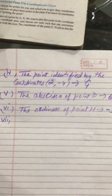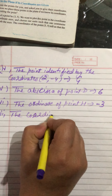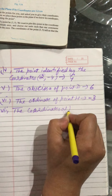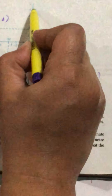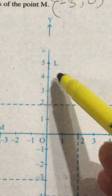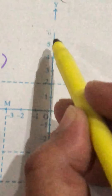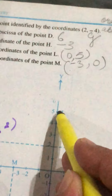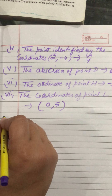The seventh part asks for the coordinates of point L. You can see point L on the graph. L does not lie in any of the quadrants — it lies on the positive y-axis. On the y-axis, the x-coordinate is always 0. Here y is 5, so the coordinates of point L are (0, 5).